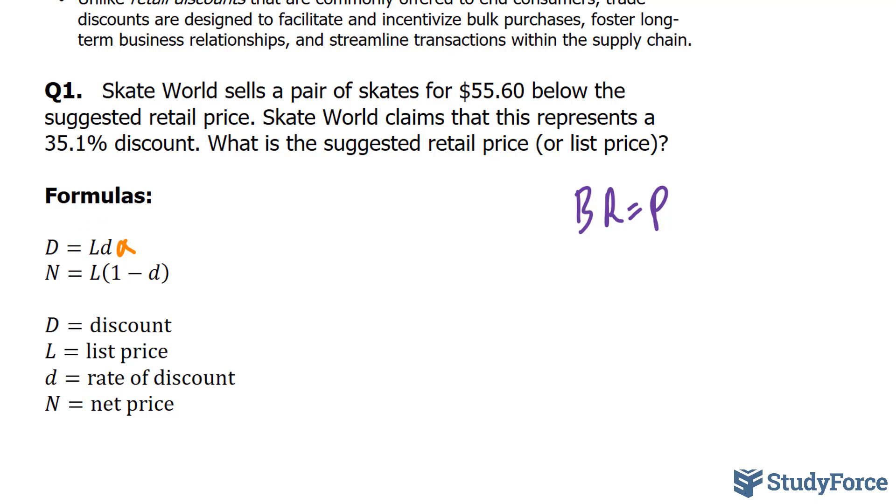Now, what's clear from the two numbers given in the question is that 35.1% represents the rate of discount because it's a percentage. So, we'll convert this into a decimal number by dividing it by 100%, and this gives us a d value of 0.351. Now, according to the question, we don't know the suggested retail price, but we do know that 35.1% of it gives us 55.60.